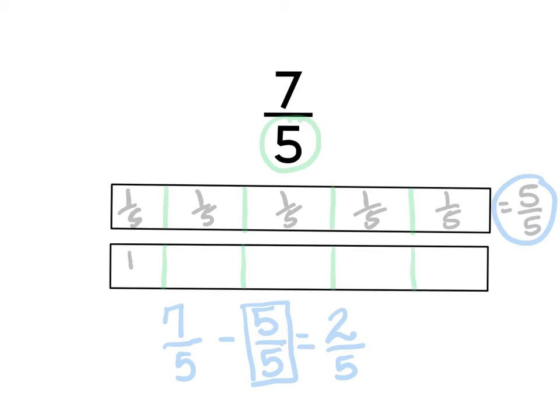And just because I only need 2 fifths, I still have to partition each section of the tape diagram into a fifth because 2 fifths is part of a whole, and I can't just section off or partition one part and say that's 2 fifths, because you have to remember that a fraction has equal parts.